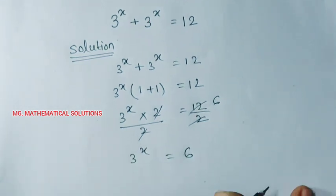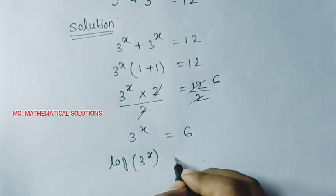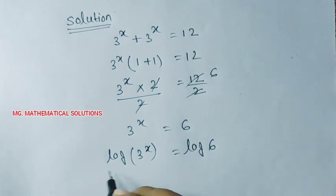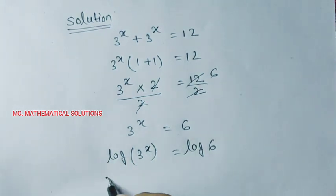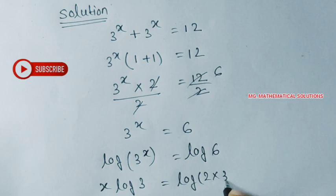Now we take logarithm on both sides so log of 3 to the power x equal to log of 6. Power x. So x now base log of 3 equal to log 6. We can write as 2 times 3.